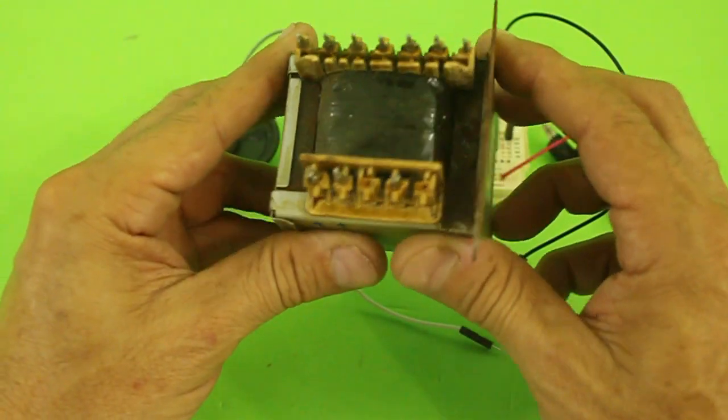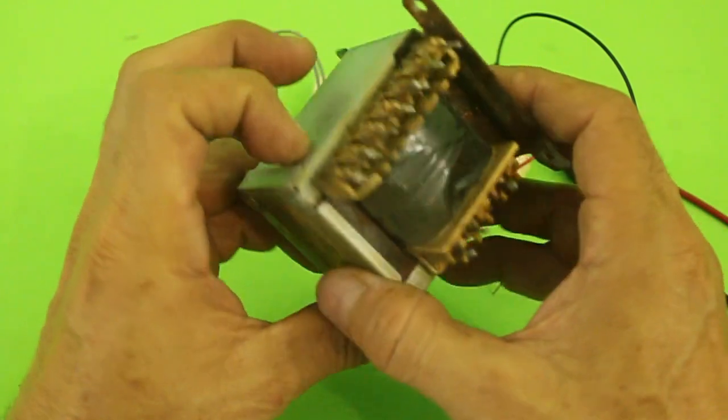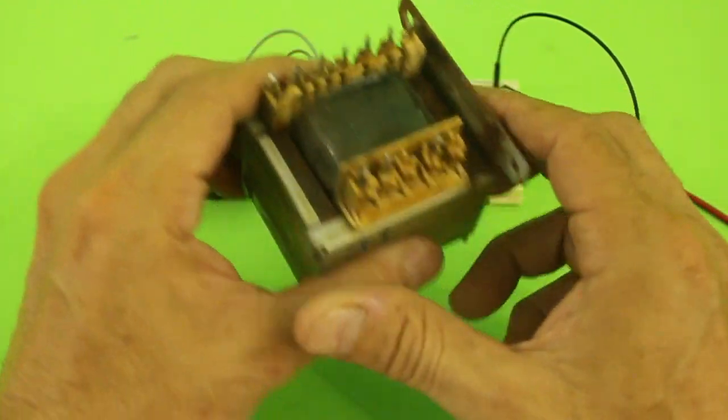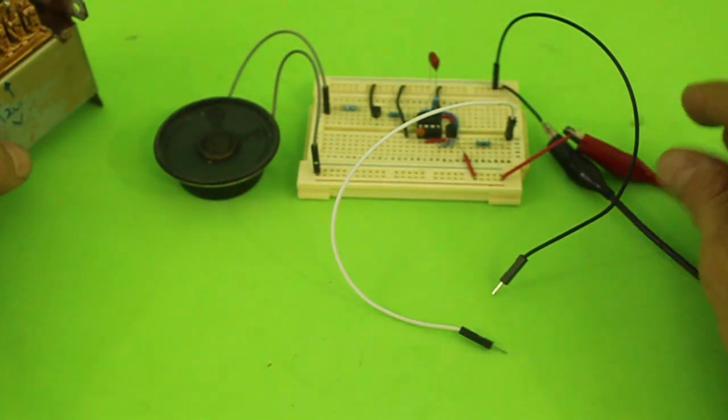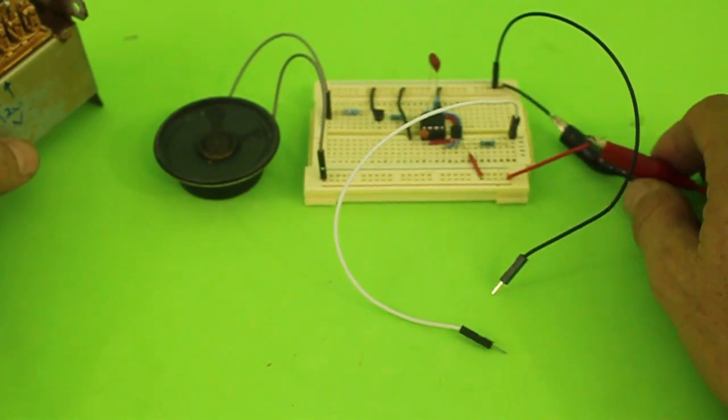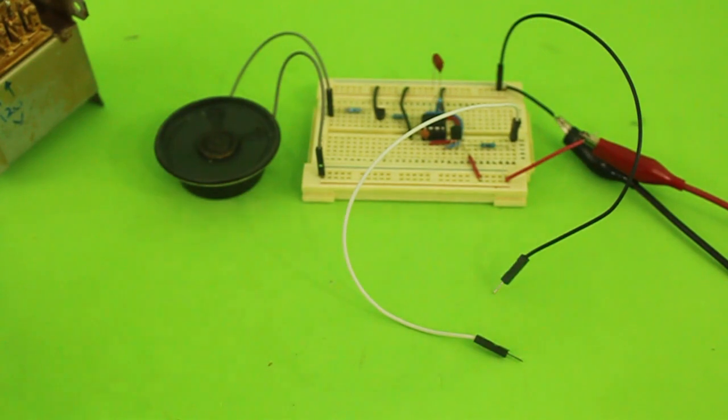Of course, you can also do this using a multimeter in the ohms scale, but a tester like this that emits a sound is more easy to use than checking ohms in the multimeter.